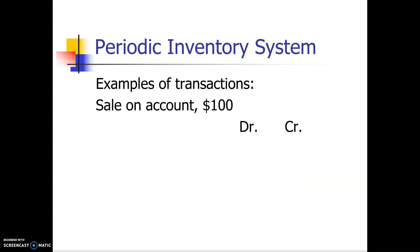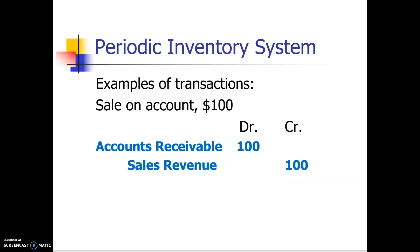When we make a sale on account, we're going to debit accounts receivable and credit sales revenue — the same way we did under the perpetual method. However, under the perpetual method we had a second entry where we updated merchandise inventory. We are not going to make that entry under the periodic system. We don't update merchandise inventory during the period.